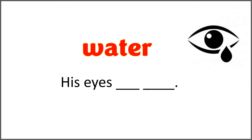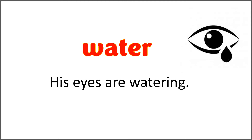The given word is 'water.' His eyes blank blank. Use 'are' with 'water' to complete the sentence. You can write the completed sentence in the comment section. And the correct answer is: his eyes are watering. We added -ing with 'water,' so it means that his eyes are watering right now.